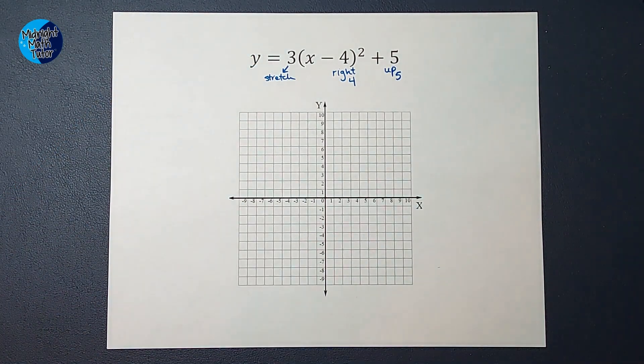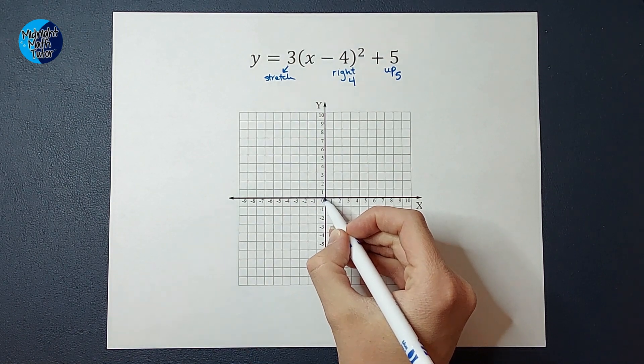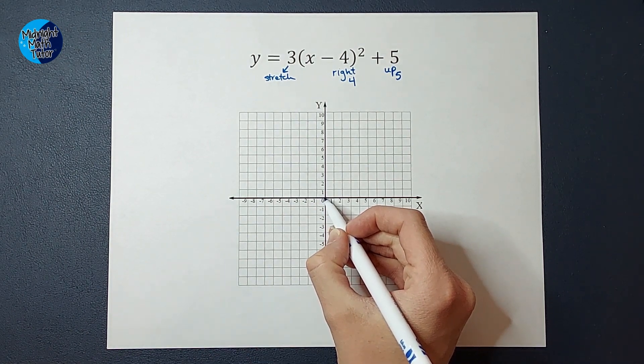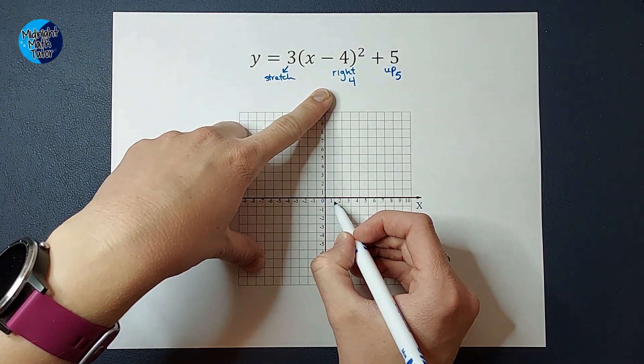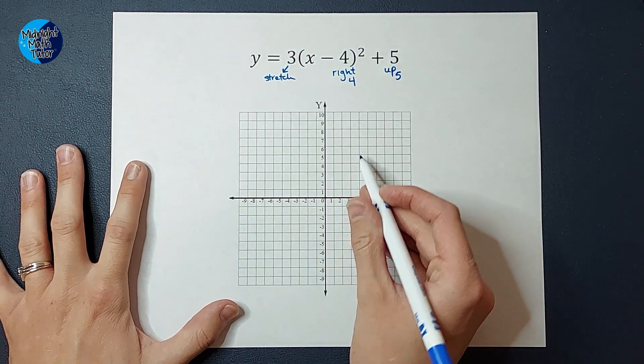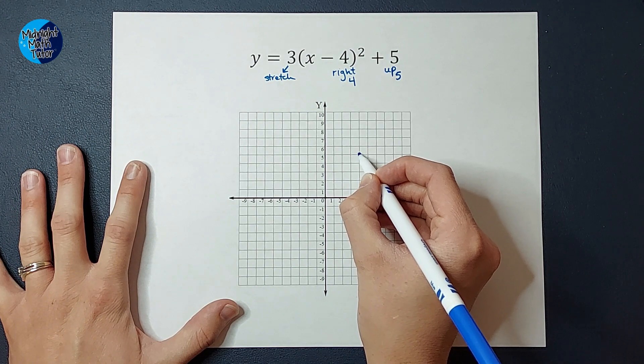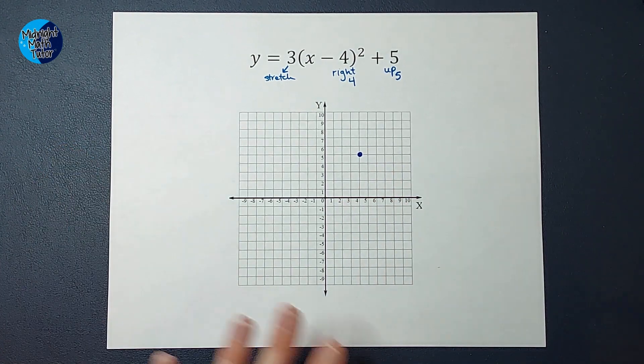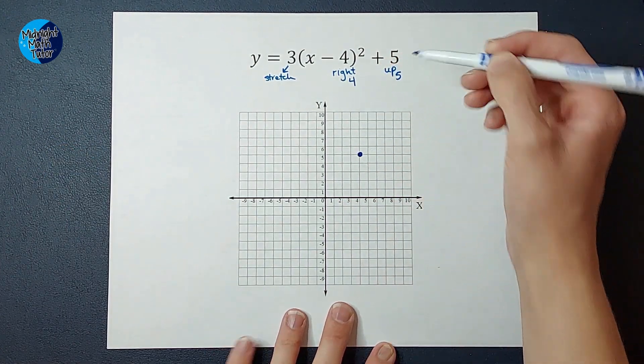So let's go ahead and see what this looks like. My parent graph is at zero, zero. It's a vertex, right? This one, we're going to move to the right four, one, two, three, four, and up five, one, two, three, four, five. So that is my new vertex. And I know it's going to open up.